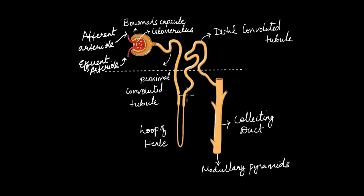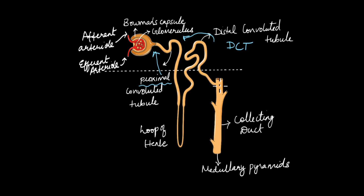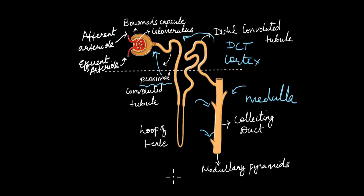The loop of Henle is a hairpin loop-like structure with two limbs: a descending limb and an ascending limb. It then becomes coiled again, forming the distal convoluted tubule. The proximal convoluted tubule is named because it is close to the glomerulus, while the distal convoluted tubule is named because it is far from the glomerulus. The distal convoluted tubule feeds the filtrate into the collecting duct, which receives filtrate from several nephrons and eventually opens into the medullary pyramids. The nephron extends from the cortex into the medulla, with the loop of Henle varying in depth.